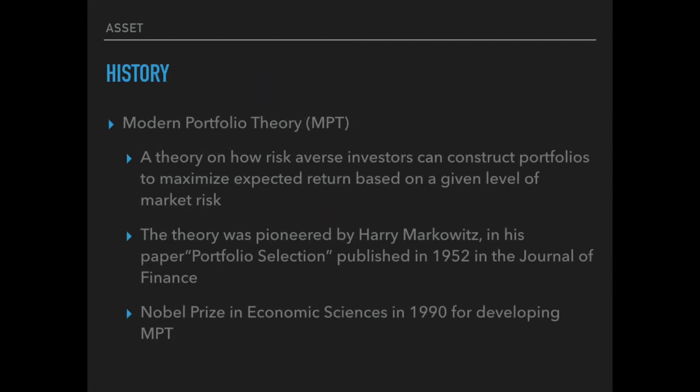From a historical perspective, asset allocation was born out of modern portfolio theory, which is a theory on how risk-averse investors can construct portfolios to maximize expected return based on a given level of market risk. The theory was pioneered by Harry Markowitz in his paper 'Portfolio Selection,' published in 1952 in the Journal of Finance. He later won a Nobel Prize in Economic Sciences in 1990 for developing modern portfolio theory, also referred to as MPT.